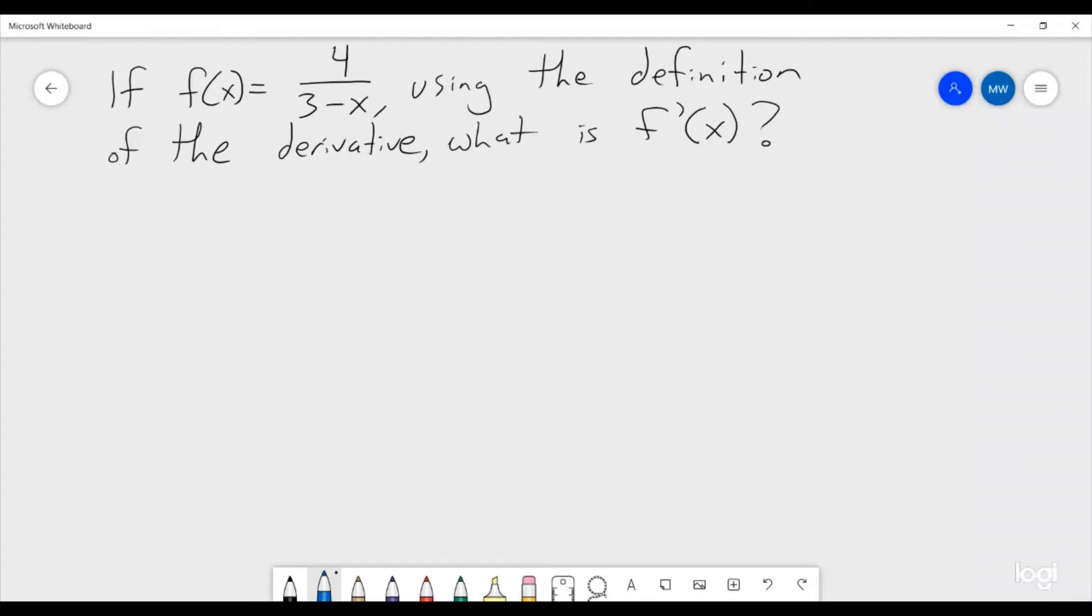Well, with this one, because we're trying to find the derivative function, there's only one definition. If it was the derivative at a point, there would be 2, but here, there's only one definition. And that is f prime of x is equal to the limit as h goes to 0 of f of x plus h minus f of x all divided by h.